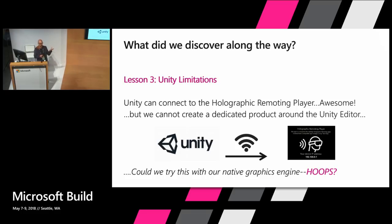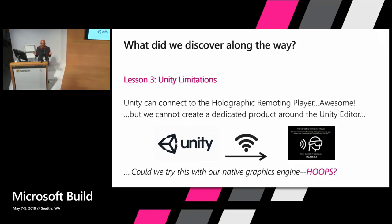We develop a lot with Unity, we debug in Unity, and we were experimenting with streaming from Unity to the holographic remoting app. This is an app that's free — you can download it to the HoloLens. It basically allows Unity to make a connection to it through Wi-Fi and start streaming the scene from Unity directly to the HoloLens. But we can't really package up the Unity game engine and make that a product in the cloud or otherwise. So we said, what if we used our own graphics engine, which is called HOOPS, built by Tech Soft 3D, and tried the same thing?